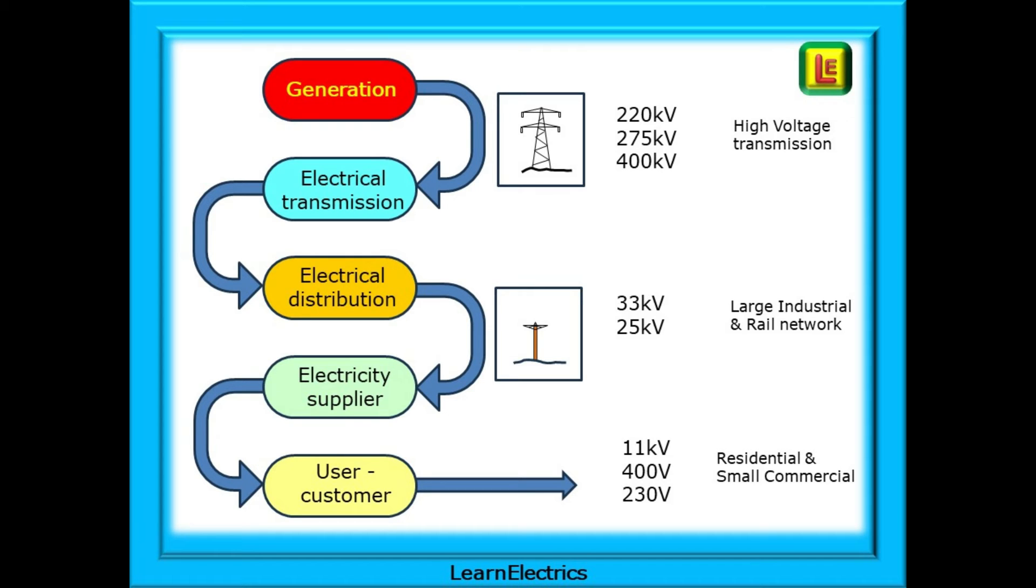We should not forget the electricity supplier, the purchaser of the wholesale electricity, who then sells it on to us, the users or customers. The customers will then use the 230 volt and 400 volt supplies in their homes, offices and industrial units. Some larger factories will require an 11,000 volt supply that they will step down to lower voltages on site. This will avoid too many losses in the cables, as you will see shortly.